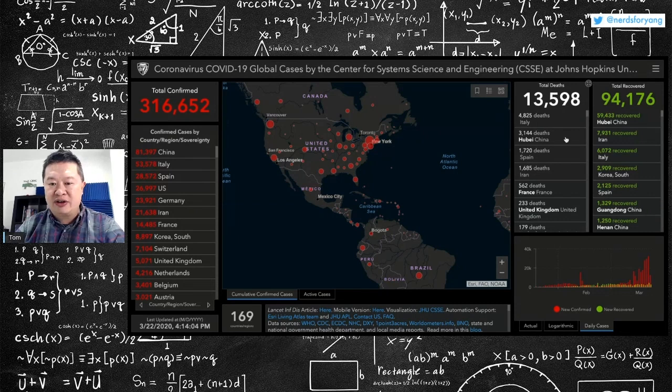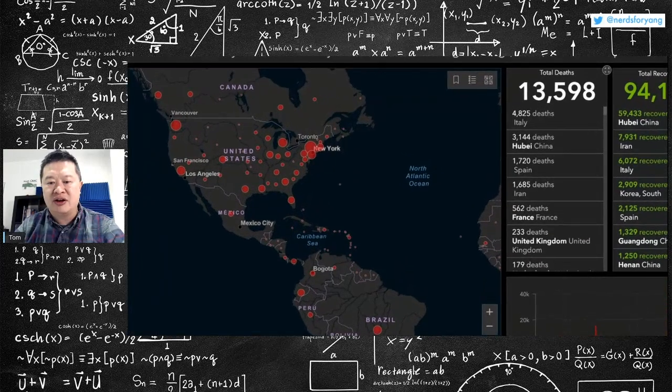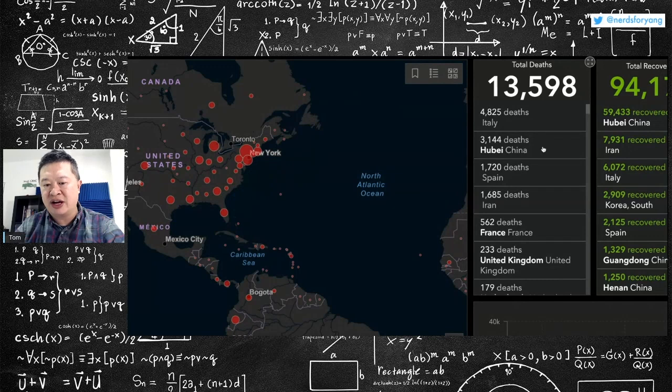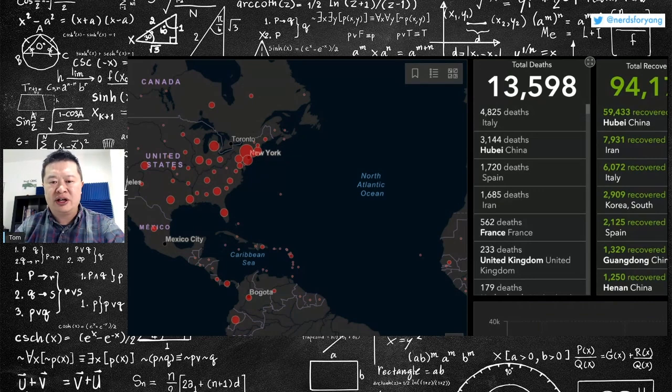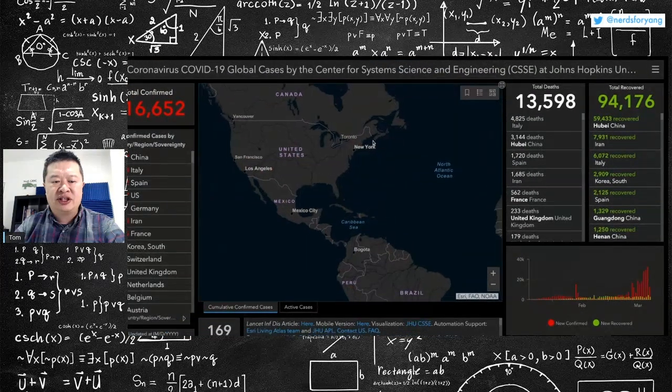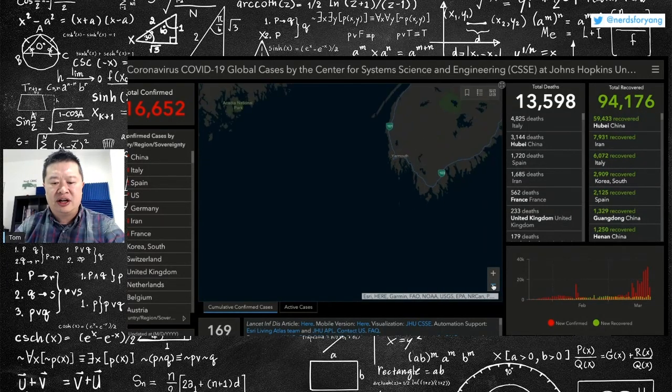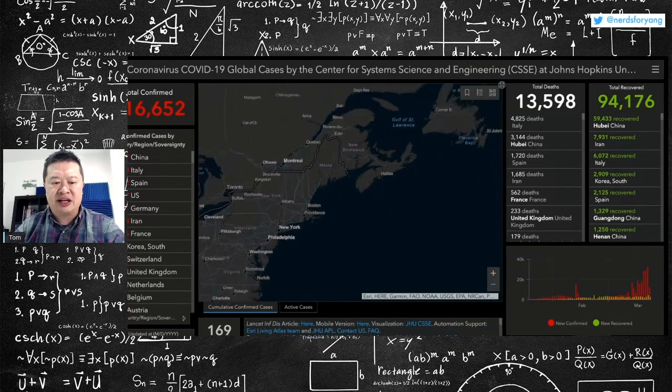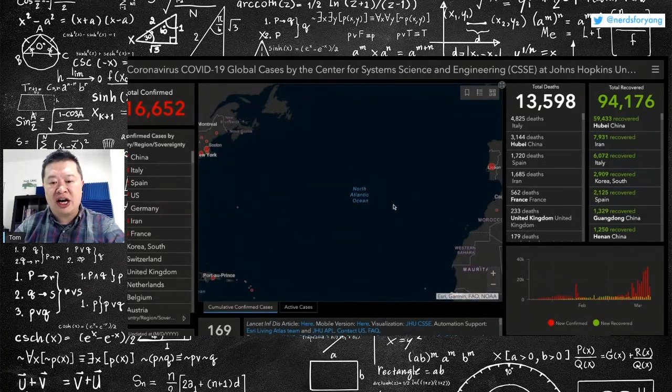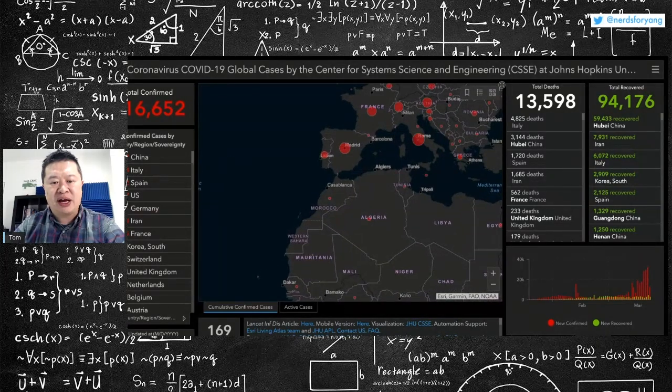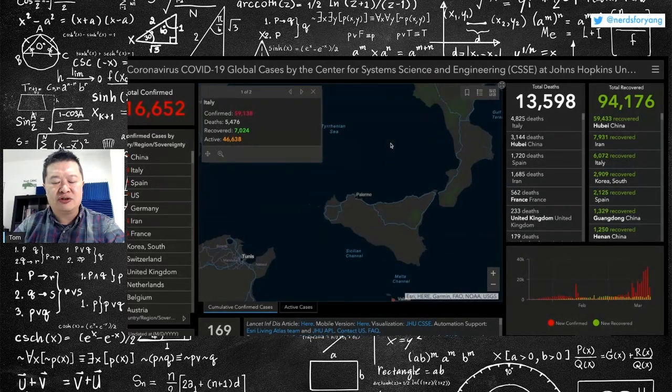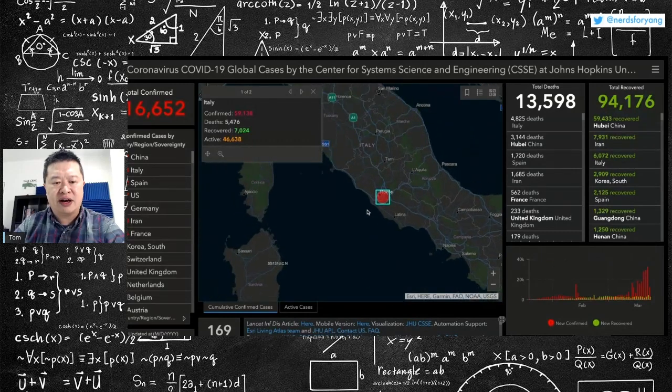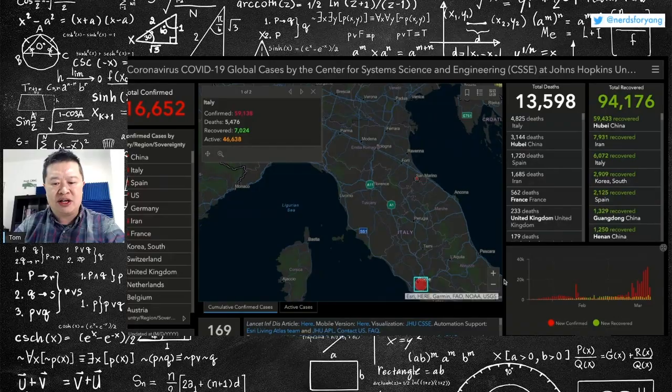So now if you look at where the deaths are, there are more deaths in Italy, 4,800, than there are in Hubei province, where this thing started in Wuhan. So that's kind of nuts. You got to wonder, I've listened to interviews with doctors in Italy, where they're talking about the reality of having to triage critical care beds and ventilators, and make decisions about do you give it to the 70-year-old grandma or the 45-year-old father of two or even the 20-year-old.